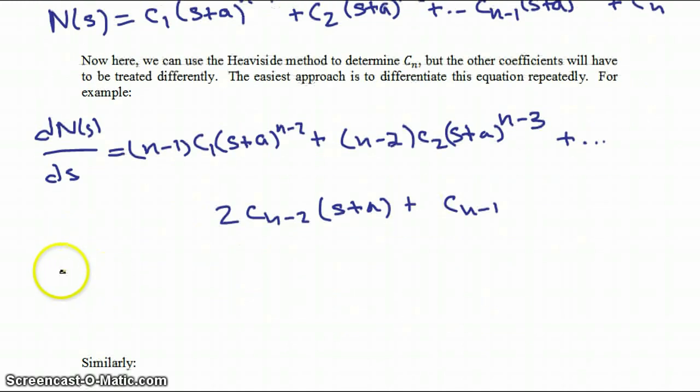Therefore, at a value of s equal to minus a, if we evaluate our derivative of N of s with respect to s at that point, then we get our coefficient Cn minus 1, because all the other coefficient terms drop out.